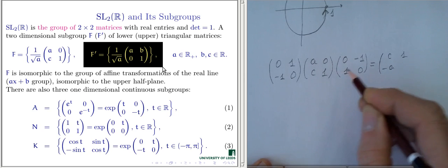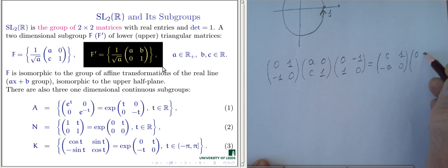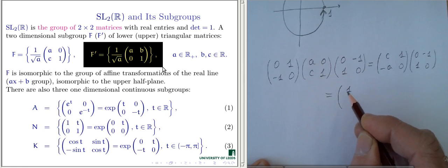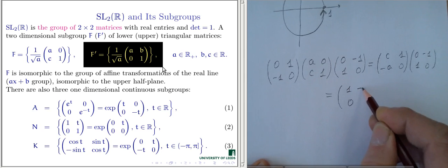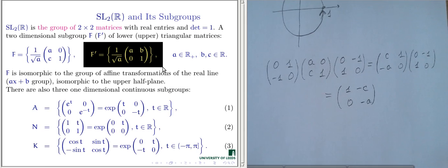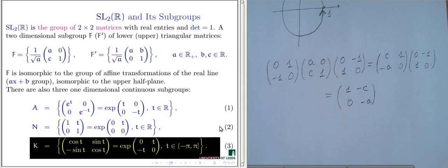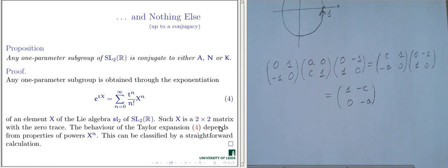That is a rather important two-dimensional subgroup, but we will not focus too much on it in our course. We will look more closely at the one-parameter continuous subgroups. Examples of such subgroups are given in formulas 1, 2, 3 — these are A, N, K: a diagonal subgroup A, an upper triangular with units on diagonal subgroup N, and a subgroup K consisting of cosine T, sine T, minus sine T, cosine T. Again, this is the exponential of a zero-trace matrix. Any other continuous one-parameter subgroup of SL(2,R) is conjugated to either subgroup A, N, or K.